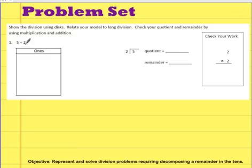This will be some of your classwork. Show the division using disks. Relate your model to long division. Check your quotient, which is your answer to your division problem, and the remainder by using multiplication and addition. Okay, so in this one I have five ones divided by two. So I'm going to represent five ones by drawing disks. And when you do this, you can probably just draw dots on your paper. That'll be fine.